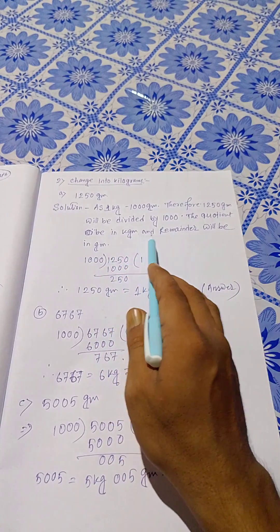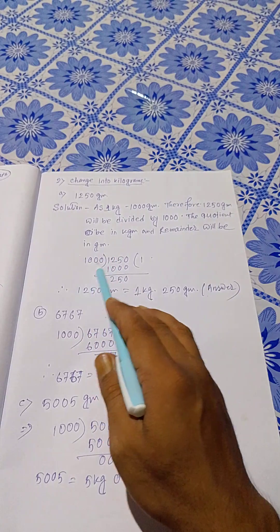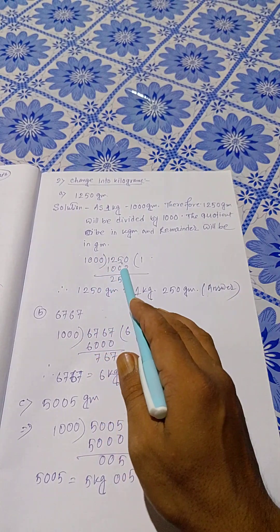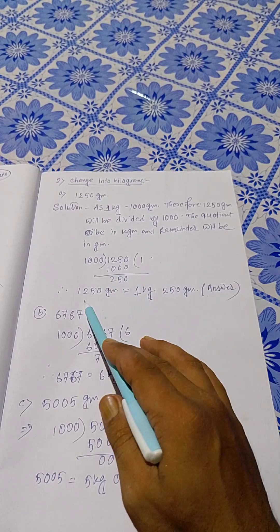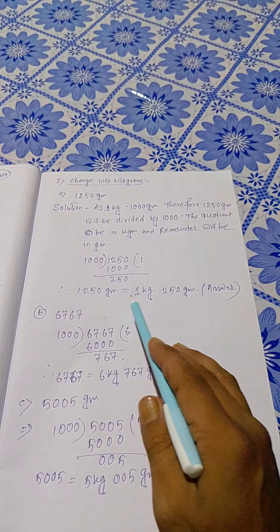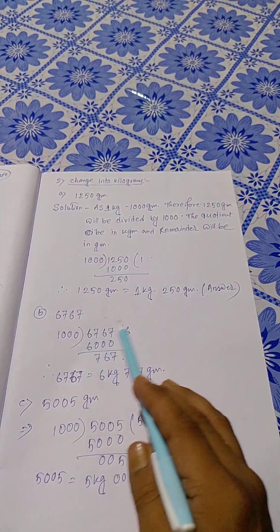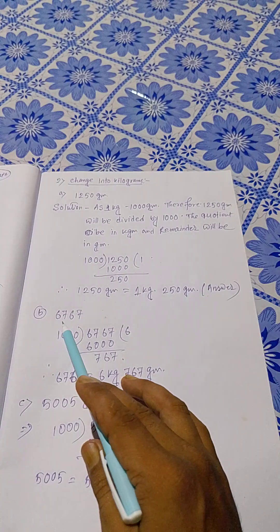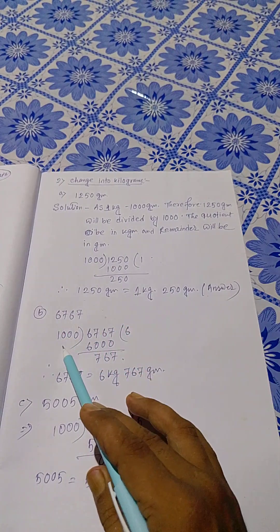In kg, remainder will be in grams. 1250 grams divided by 1000: 1250 grams equal to 1 kg 250 grams. Answer. 6767 grams.